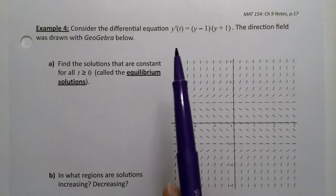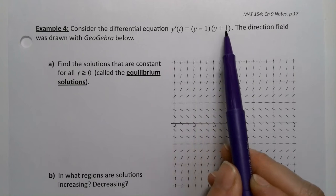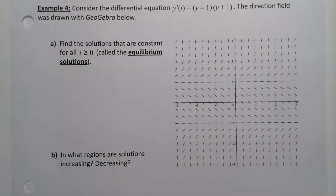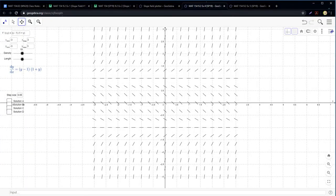For this example, we want to consider the differential equation y'(t) = (y - 1)(y + 1). The direction field was drawn with GeoGebra below. I've actually linked to it in the class notes page. So if you want to see it, there it is. Isn't that lovely?